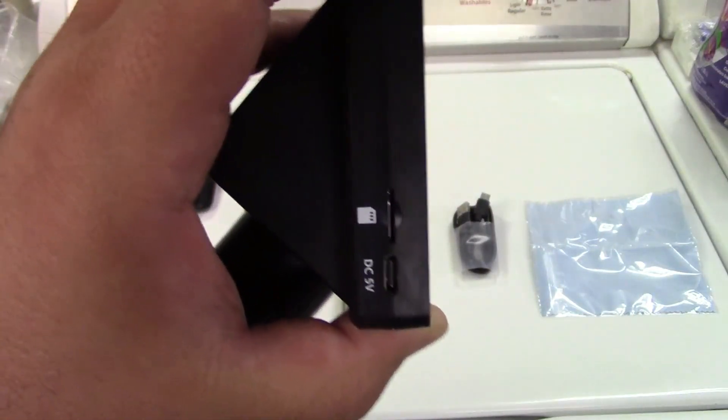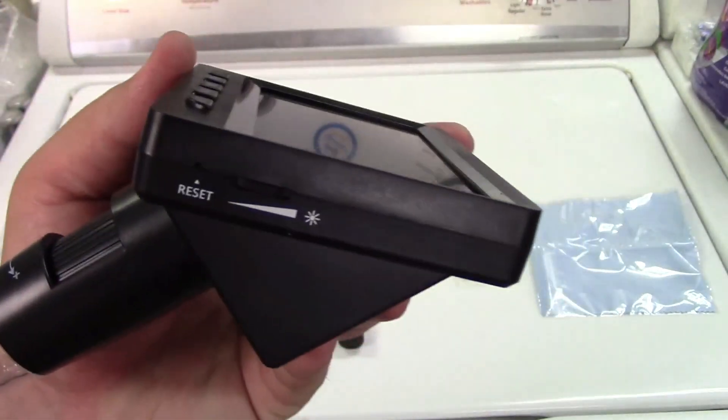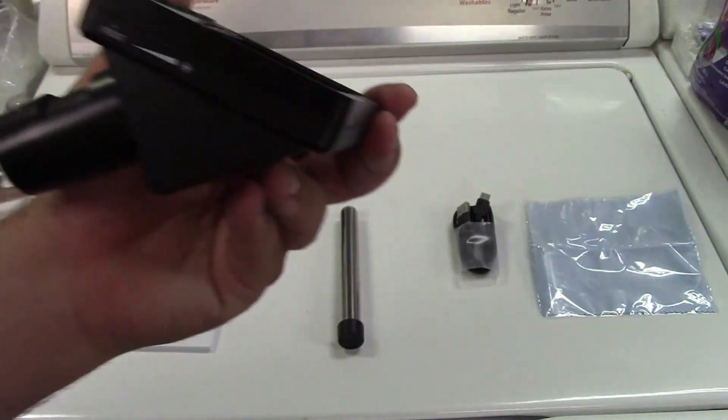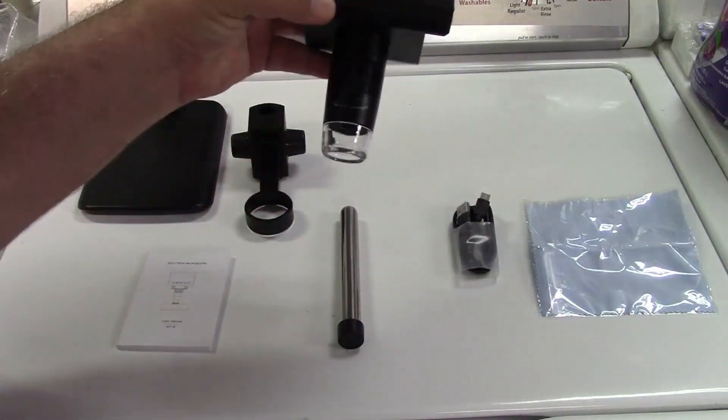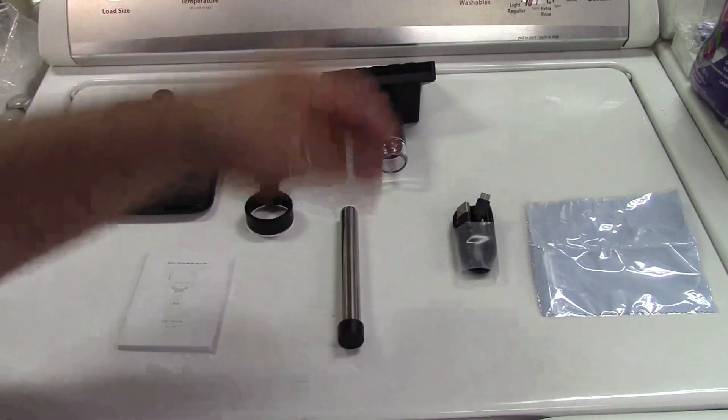USB charge port and a microSD card slot, and over there you can control the brightness of the lights and a focus ring down there. I'll show you that in more detail in a bit.